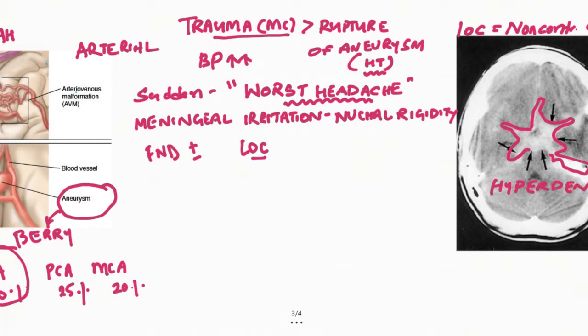This is a very severe subarachnoid hemorrhage which is difficult to miss on CT scan, but sometimes the CT may turn negative. If you don't find any hemorrhage on non-contrast CT scan, the next step is CSF examination by lumbar puncture — you will definitely see blood in it, and this is sometimes also known as xanthochromia.